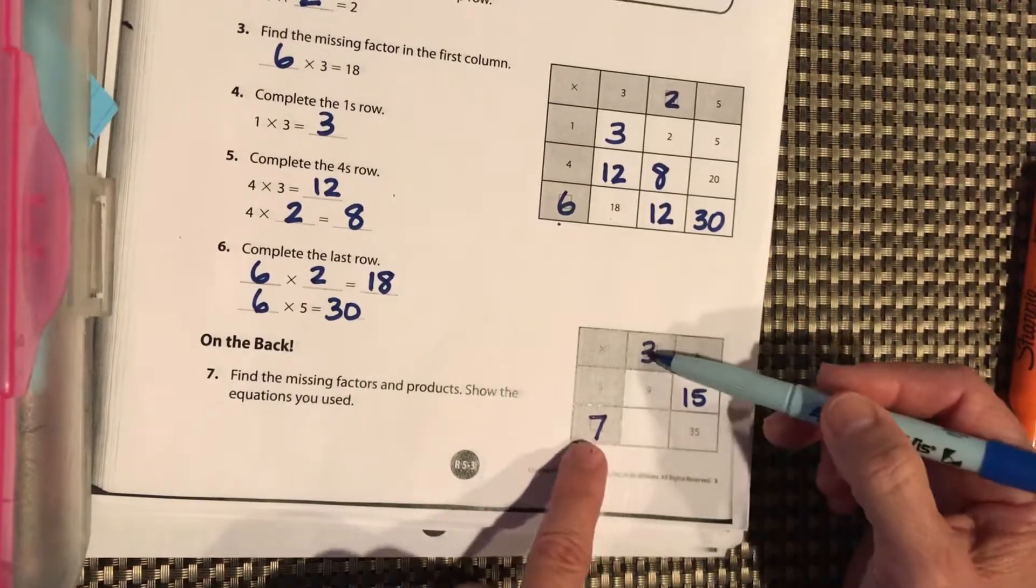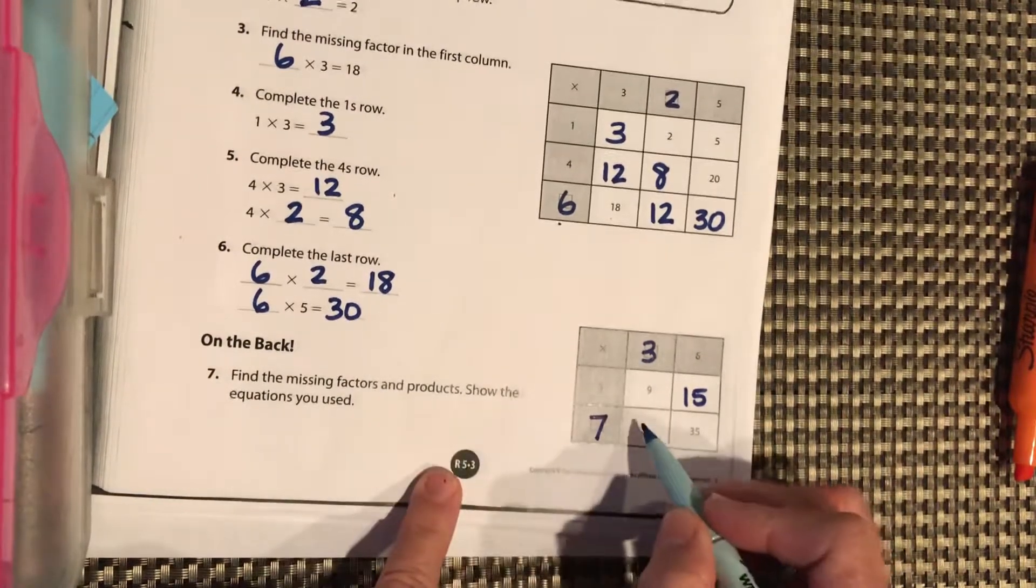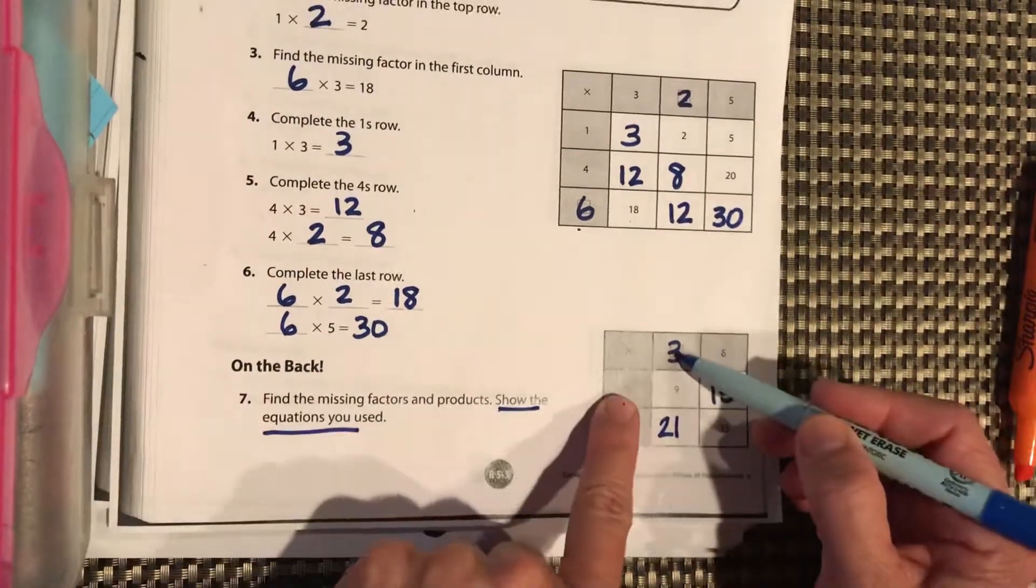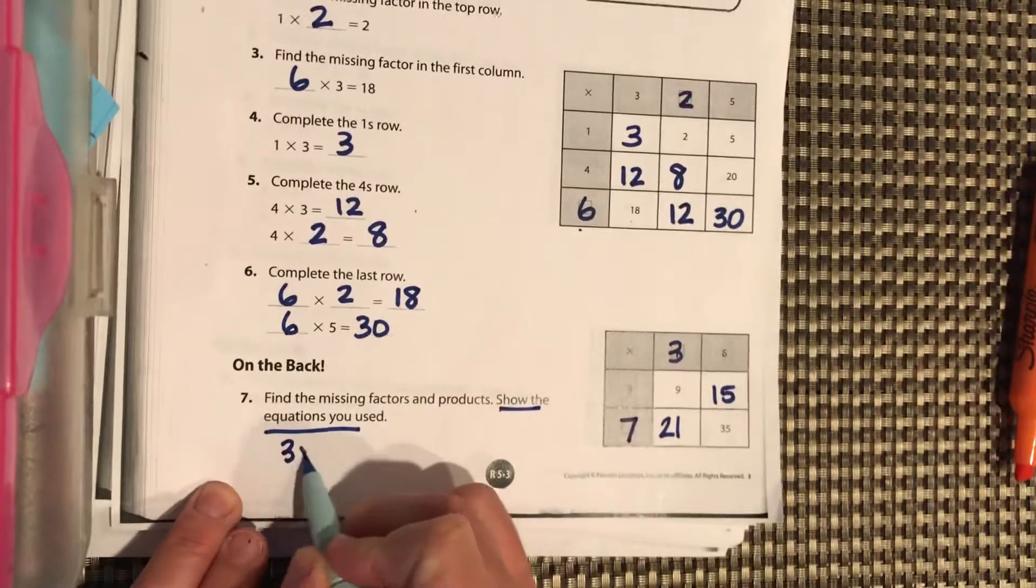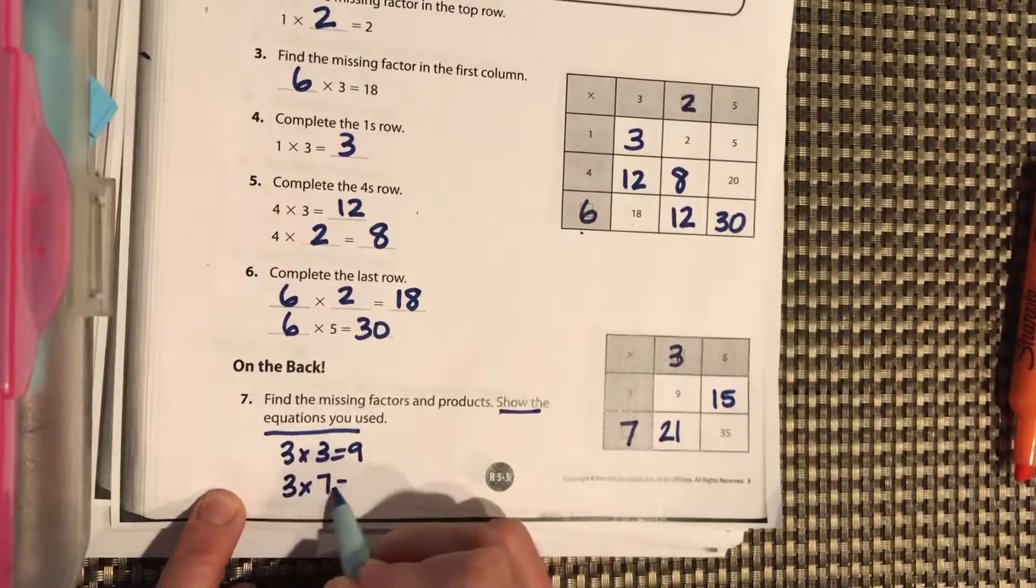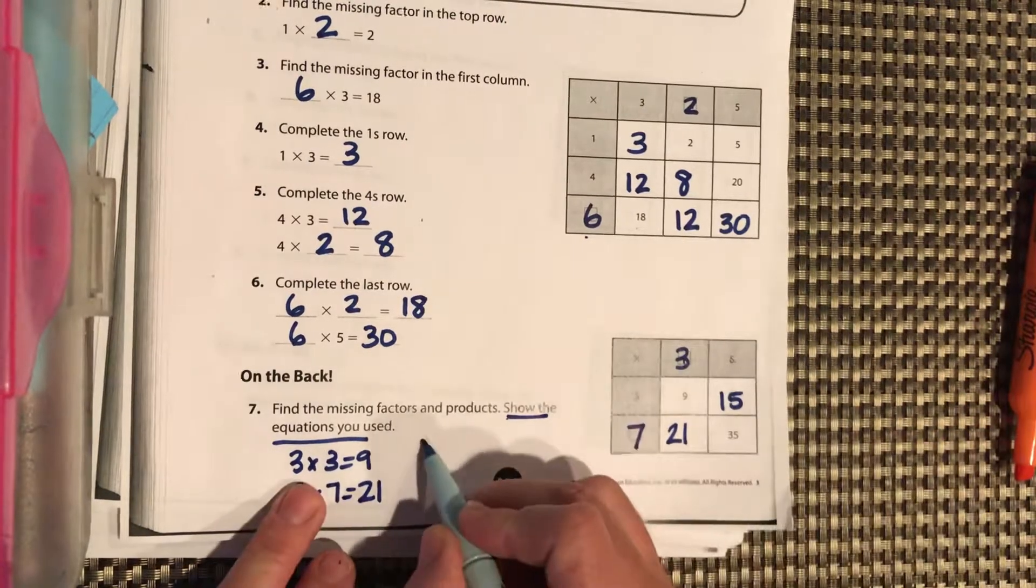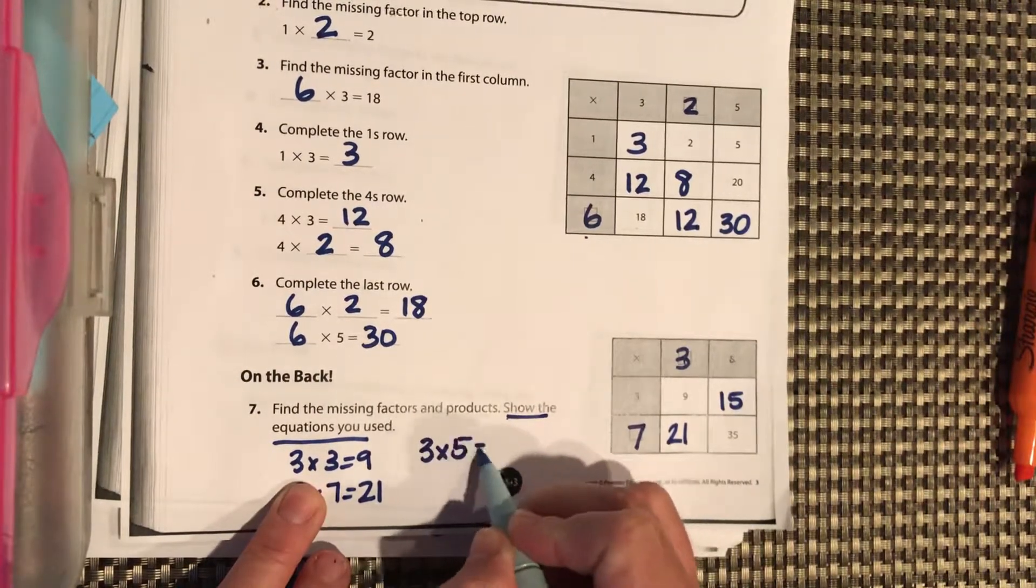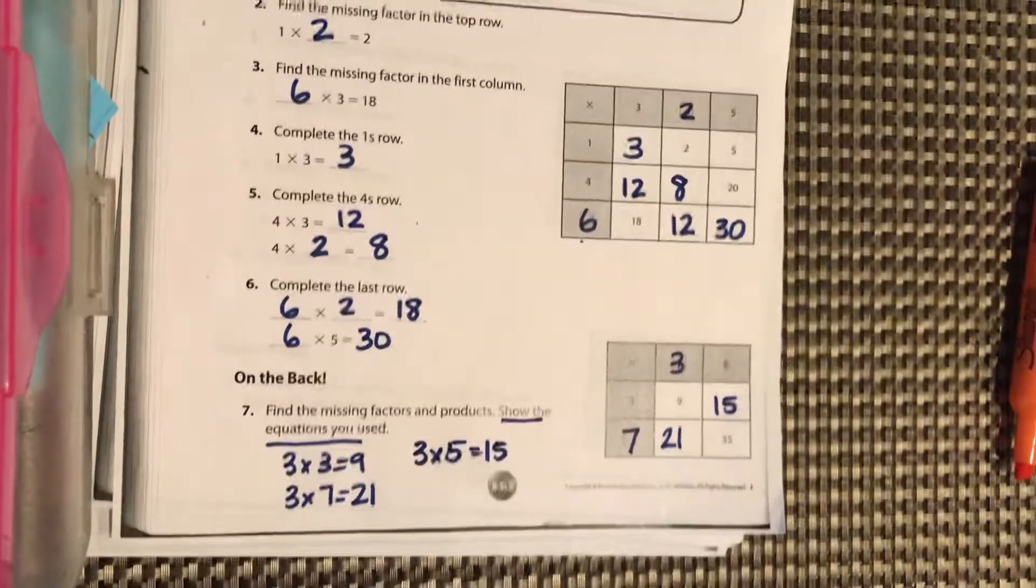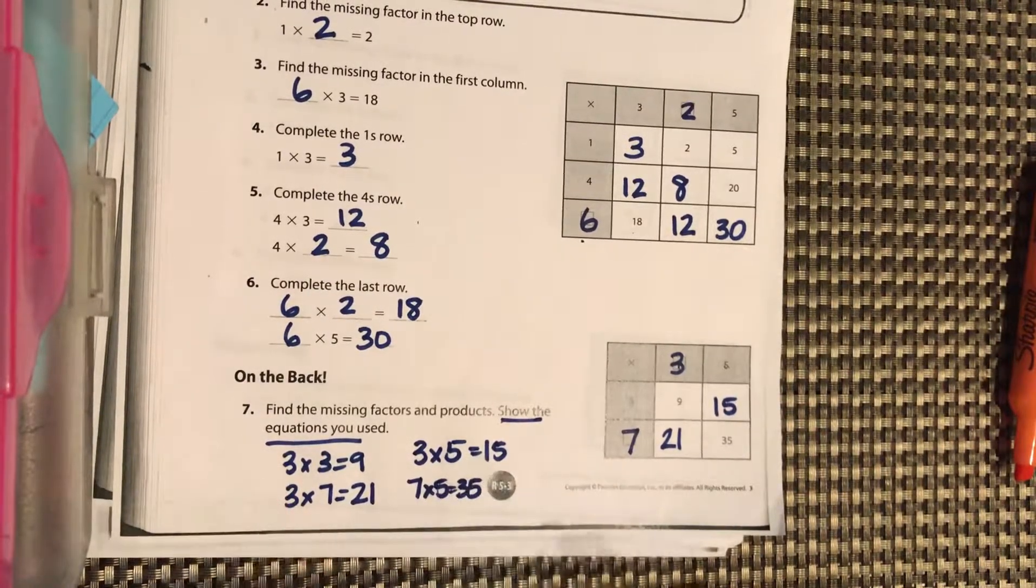So 5 times 7 equals 35. And now we can fill in this last blank of 7 times 3 equals 21. So show the equations you used. You're going to do 3 times 3 equals 9, 3 times 7 equals 21, 3 times 5 equals 15. And you write the last one. Okay. Good job.